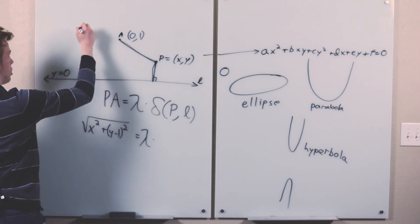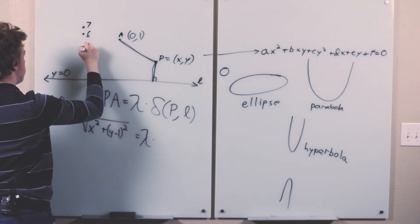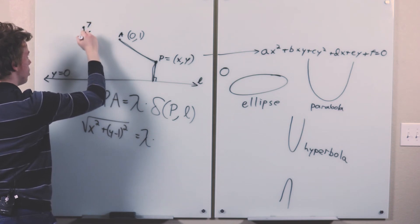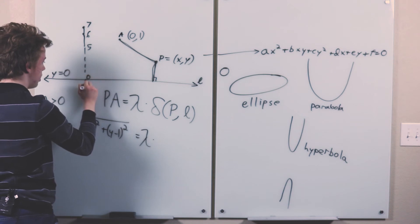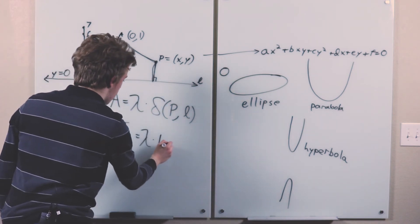And this distance is going to be the absolute value of y. Because, like, if you start out like 7, 6, 5 taking points with these y-coordinates, the distance stays that. But then at 0 it's 0, and then negative 1, the y-coordinate negative 1 gives you a distance of 1, negative 2 gives you a distance of 2, and so on. So you get the absolute value of y.